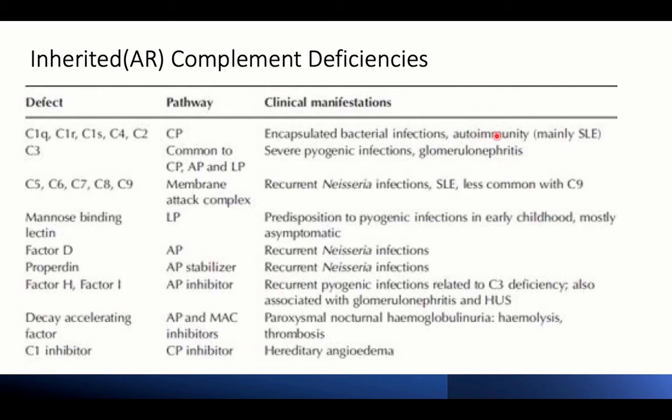C3 deficiency leads to susceptibility to severe pyogenic infections. Deficiency of the membrane attack complex from C5 to C9 is associated with recurrent Neisseria infections, meningitis, and meningococcemia — this is frequently asked. Factor D and factor B deficiency involves initiation of the alternative pathway, and their deficiency is also associated with recurrent Neisseria infection.